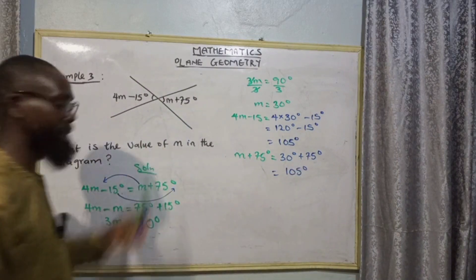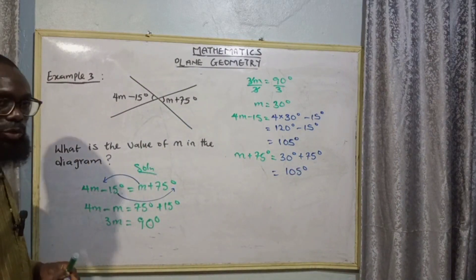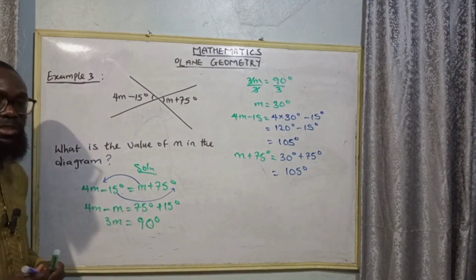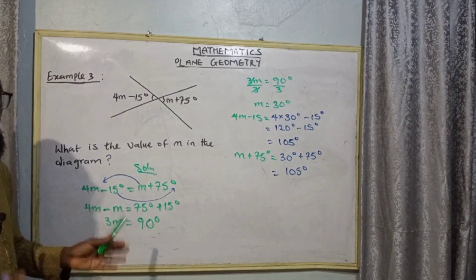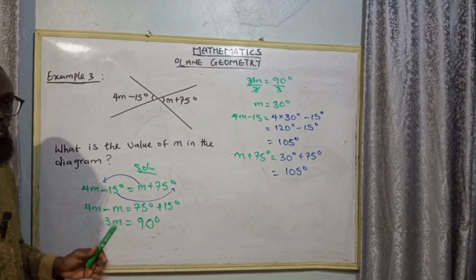Let's check: 4M minus 15 = 4 × 30 minus 15 = 120 minus 15 = 105 degrees. And M + 75 = 30 + 75 = 105 degrees. You can see they are both equal to each other — that is basically the opposite angles are equal.